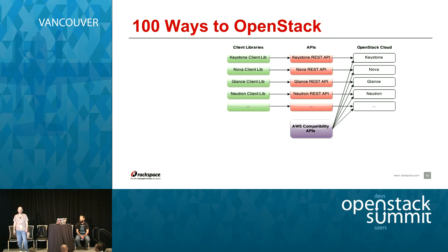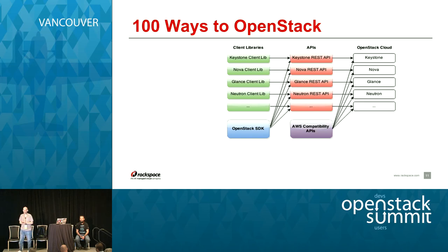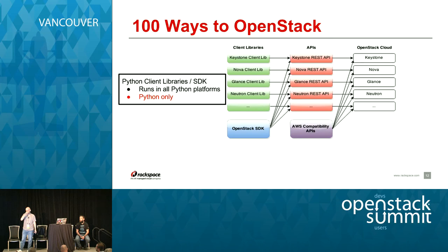For each of the modules, there's also a Python client library that you typically install with PIP, which basically wraps the corresponding REST API. You can use functions or object-oriented programming to talk to the cloud. In recent times, there was a new project called the OpenStack SDK. It tries to consolidate all these many Python libraries into a single library that talks to most of the core modules in the OpenStack cloud.